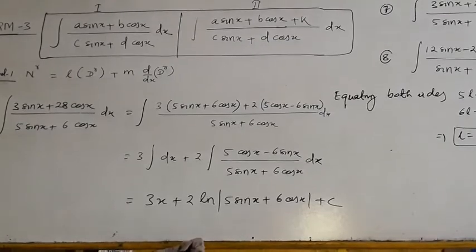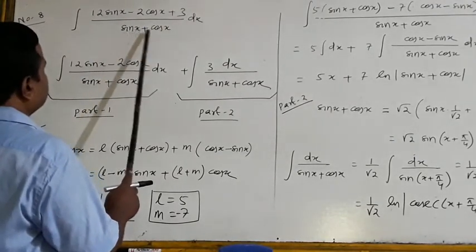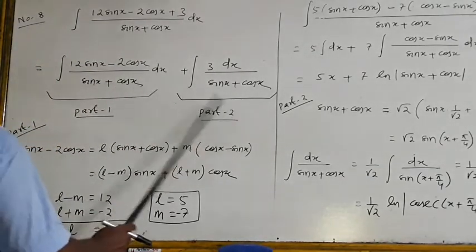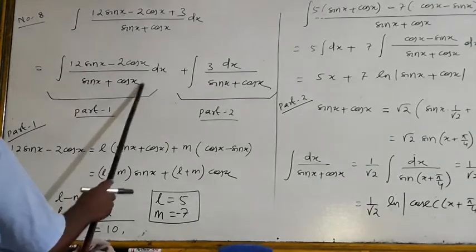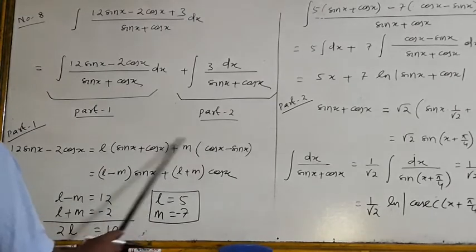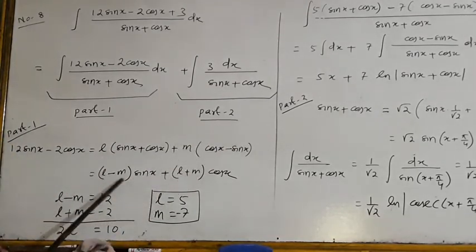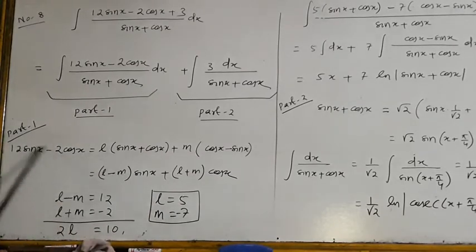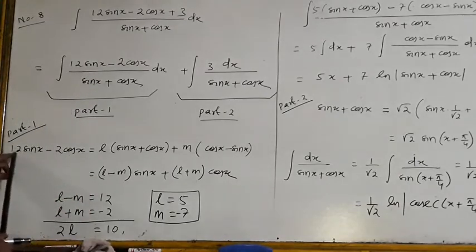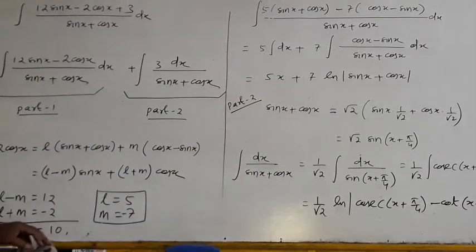Problem 8: integrate (12sin x − 2cos x + 3)/(sin x + cos x). Separate into two parts. Part 1: (12sin x−2cos x)/(sin x+cos x). Write numerator = L(sin x+cos x)+M(cos x−sin x). Equating coefficients: L−M = 12 and L+M = −2. Solving: L = 5, M = −7. So Part 1 = 5∫dx − 7∫(cos x−sin x)/(sin x+cos x)dx = 5x − 7ln|sin x+cos x|.